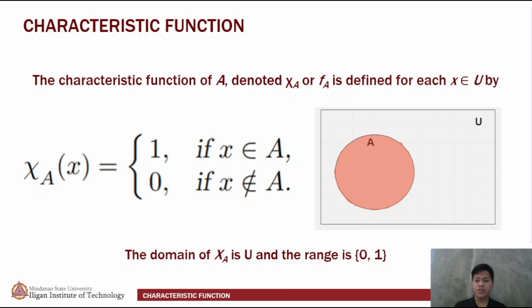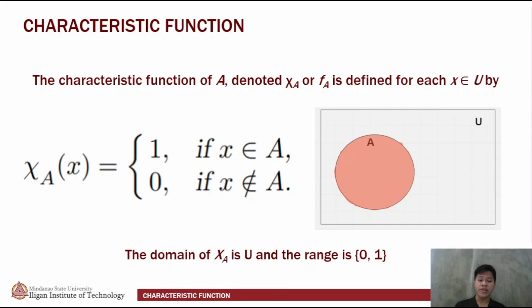The domain of the characteristic function of a given set — in this case, A — is the universal set U, and it will always be the same case with other given sets. The range is from 0 to 1, and for the characteristic function, we will only be using the integers 0 and 1 for the range.